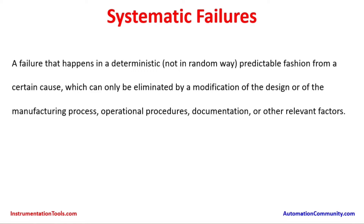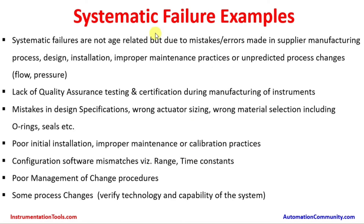Systematic failures are not age-related but due to mistakes and errors made in supplier manufacturing processes, design, installation, improper maintenance practices, or unpredicted process changes in flow and pressure. If the process operation is changed to achieve higher production output or throughput, the flow or pressure in the piping can exceed design limits at certain times, creating chances of failure.